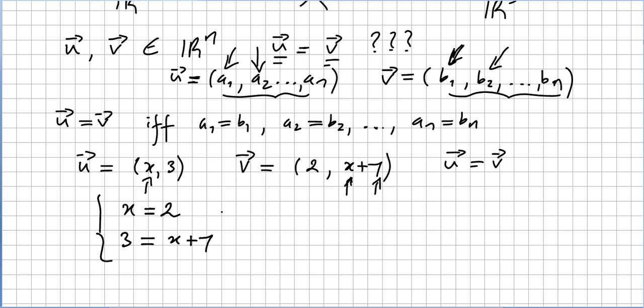Right? So x equals 2 and 3 equals x plus y. But since x is 2, we replace x by 2, and then we subtract 2 from both sides and we get x equals 2 and y equals 1.